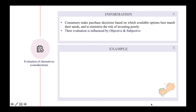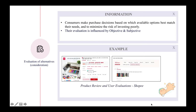The third stage is evaluation of alternatives or consideration. Consumers make purchase decisions based on the best available option to minimize the risk of investing poorly. Their evaluation is influenced by two major characteristics: objective factors like features, functionality, price, and ease of use; and subjective factors like feelings about a brand. For example, a customer buying a pencil case on Shopee will base the decision on product reviews and past user evaluations.